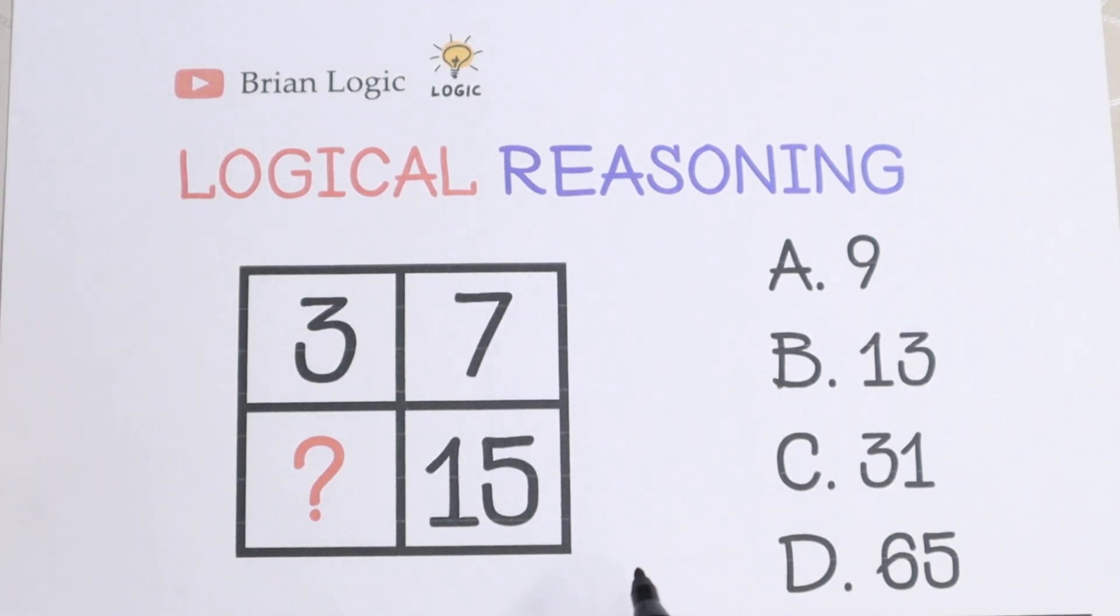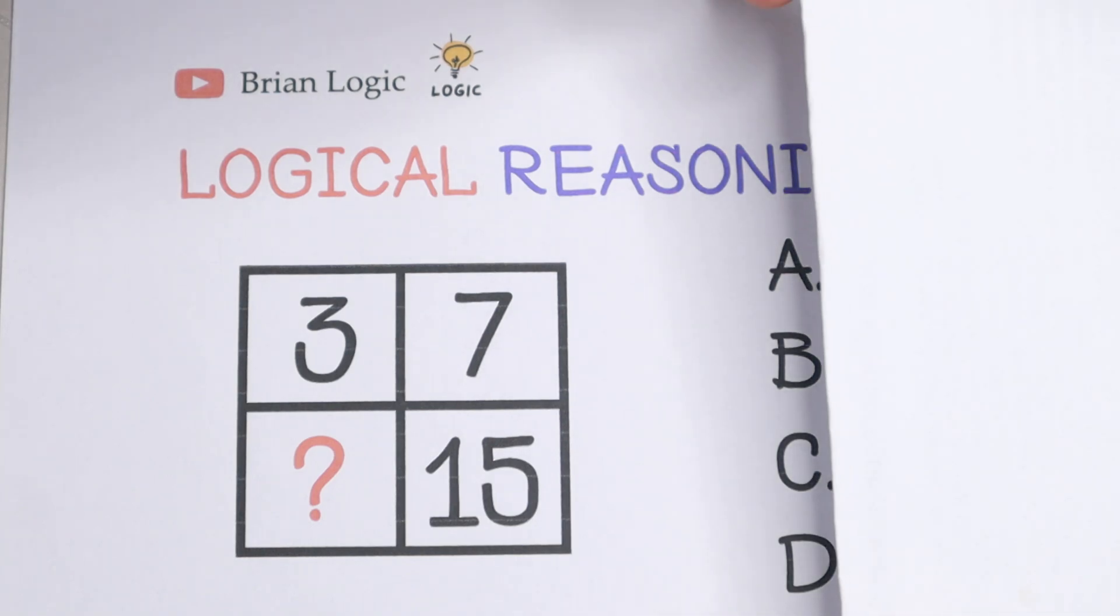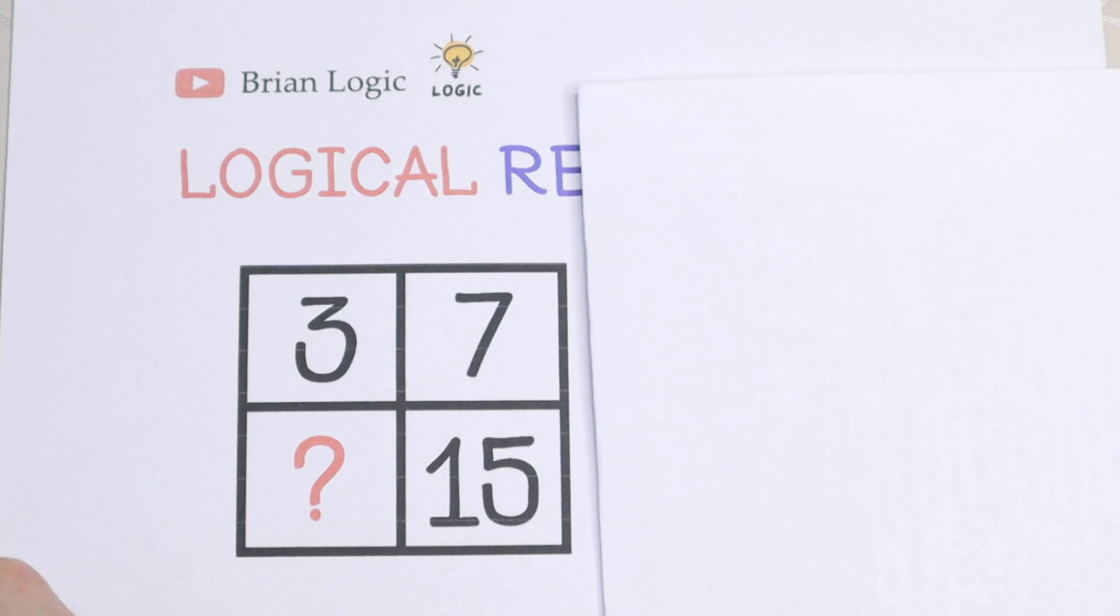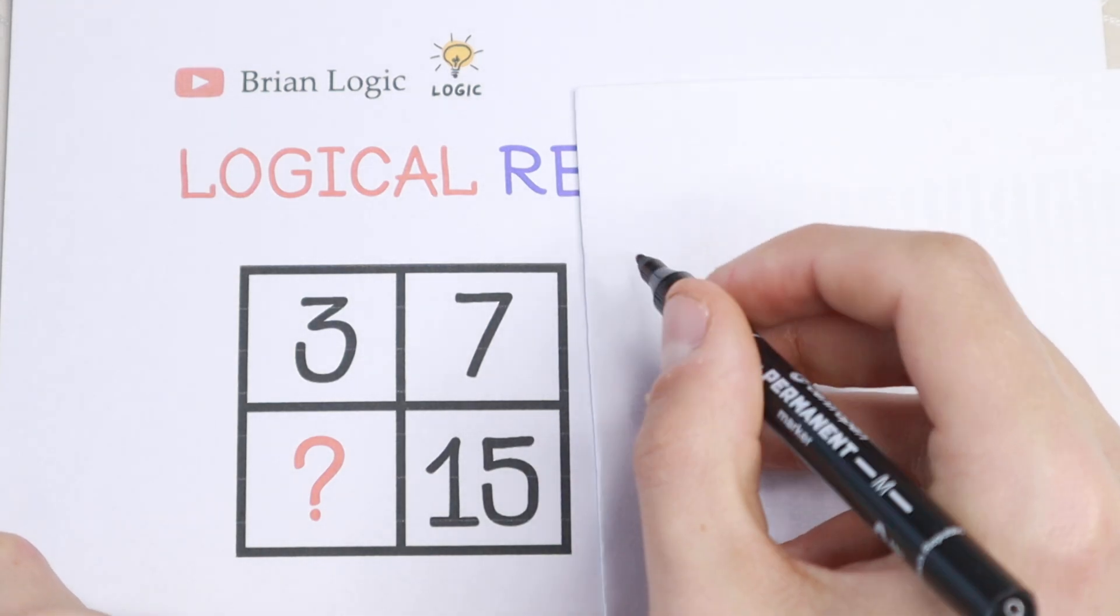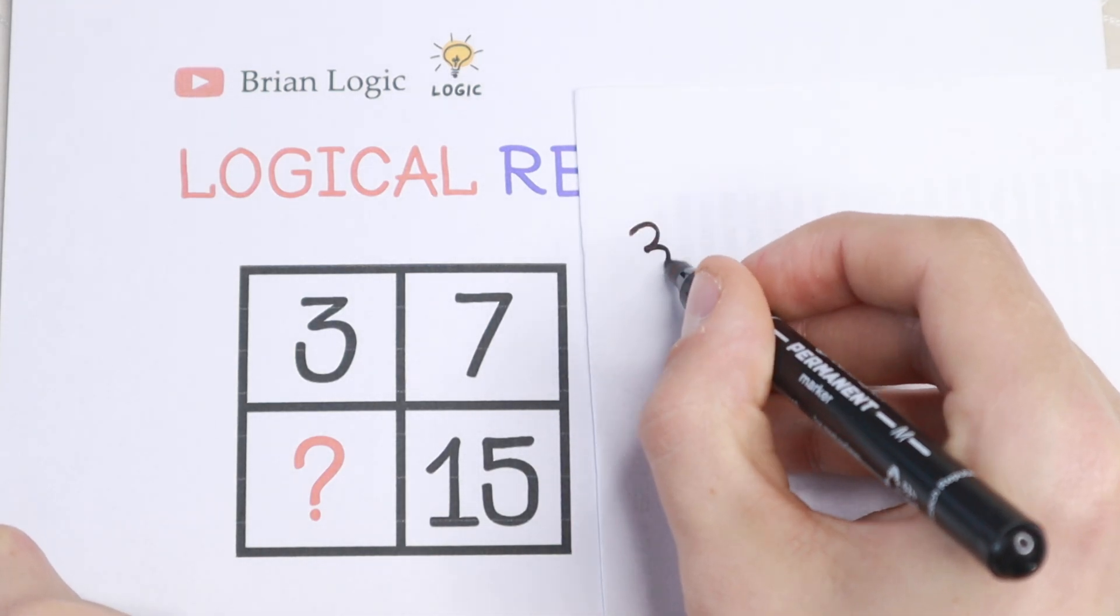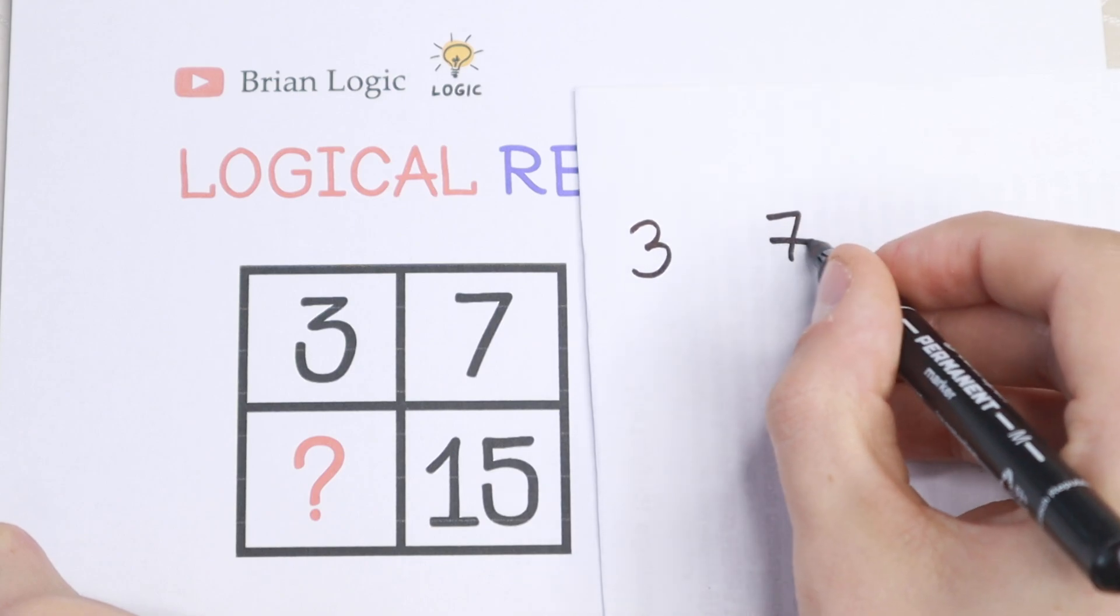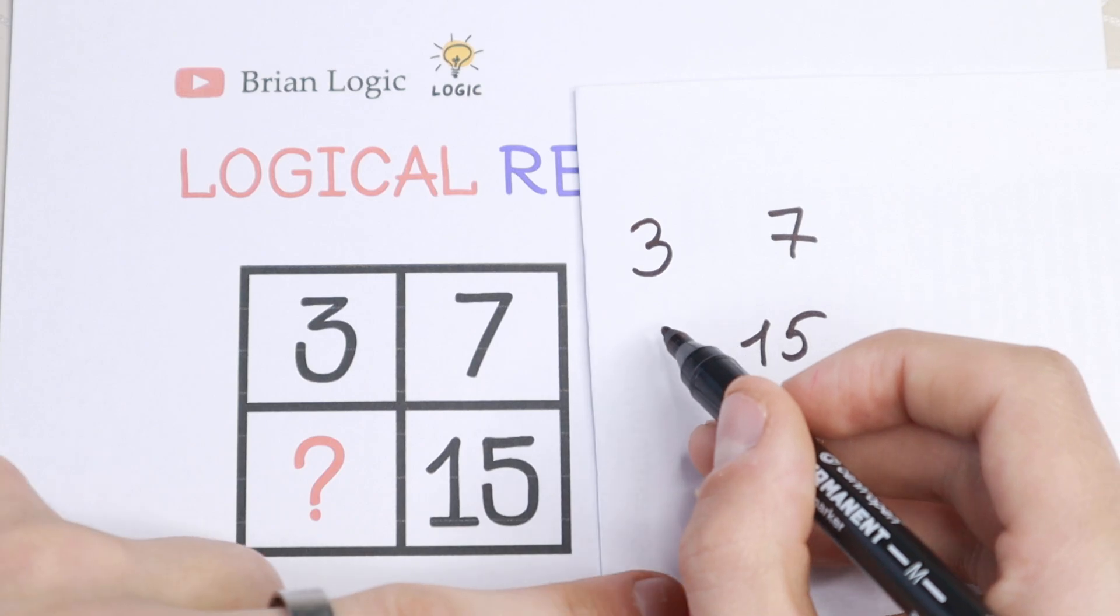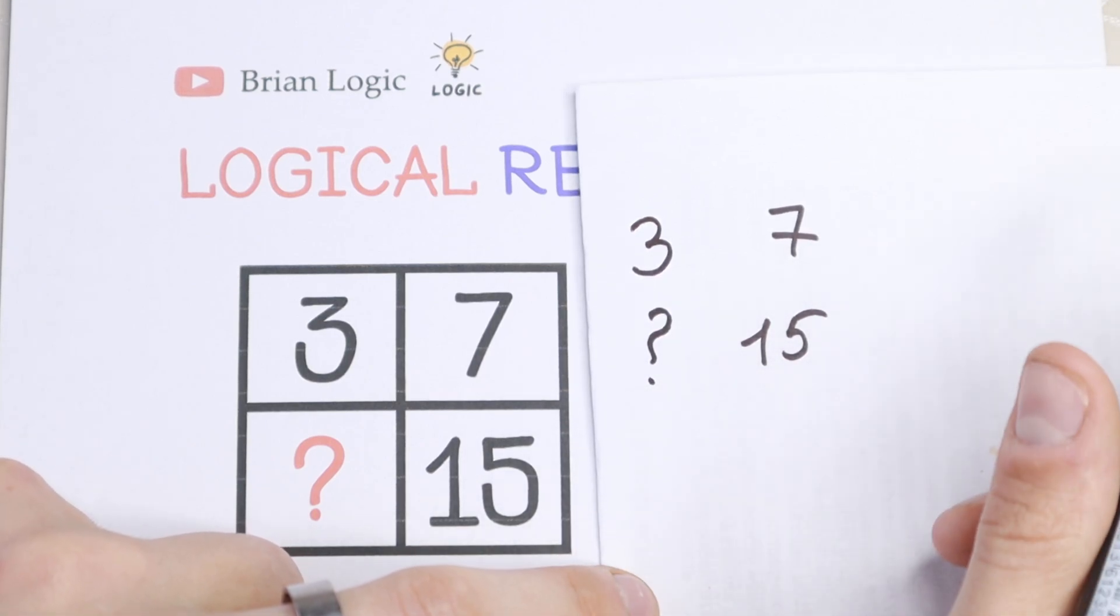So let's try to solve it. We have 3, 7, 15, and we need to find the last number. How can we do this? We have 9, 13, 31, and 65. Firstly, I suggest you to write these numbers. So let's do this, let's write at first this number. We have the first 3, second 7, and 15 right here.